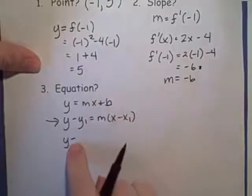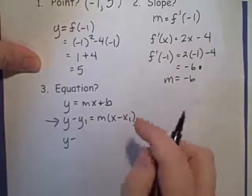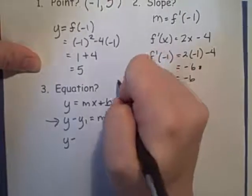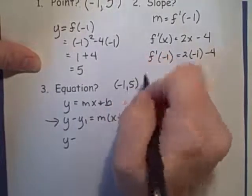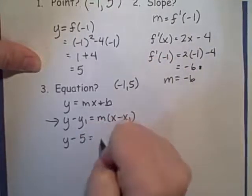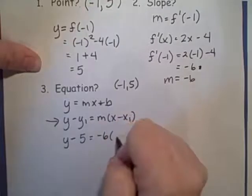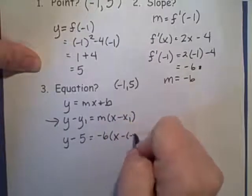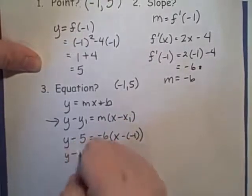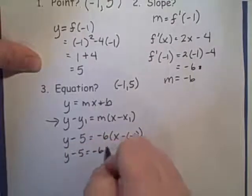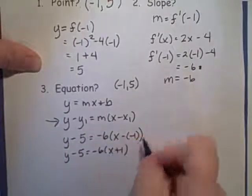We have y minus our y value of our point. Remember, it went through negative 1, 5. So it's going to be y minus 5 equals our slope, that's negative 6, times x minus negative 1. So I have y minus 5 is negative 6 times x plus 1.